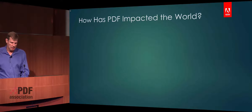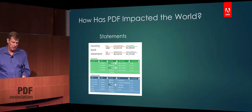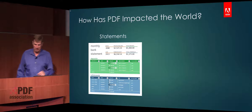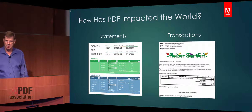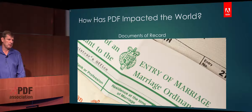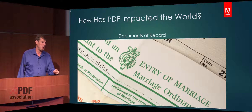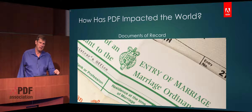How has PDF impacted the world today? This speaks to the brand of PDF — its value and what people perceive it to be. For everybody, all your bank statements, financial statements are online today available as PDF. PDF is a dominant file format for transactions of record — when you buy something, you usually get a PDF. Documents of record — mortgage statements, marriage certificates — everything that represents paper predominantly goes through PDF. PDF being a paper-based format that transitions you from paper to digital is the natural place to be.